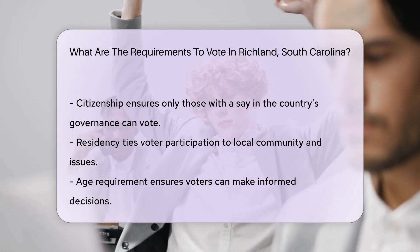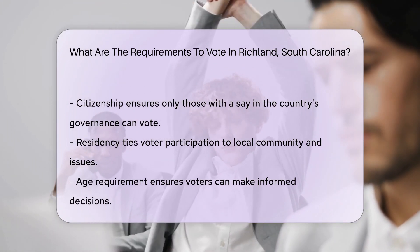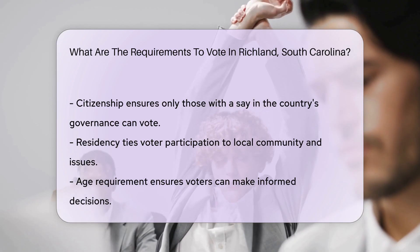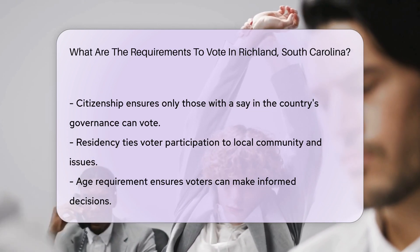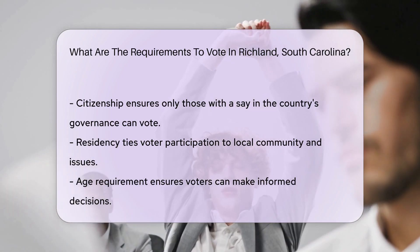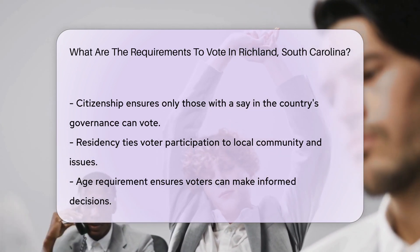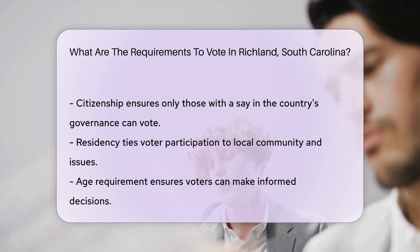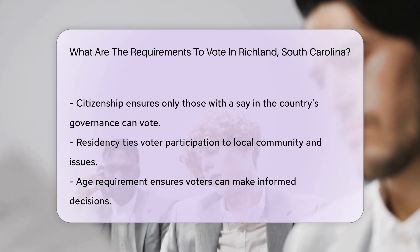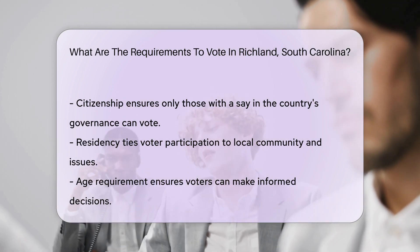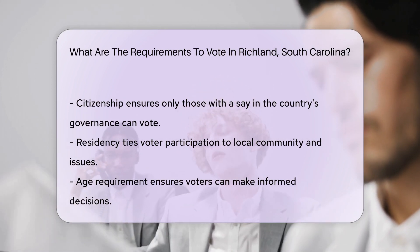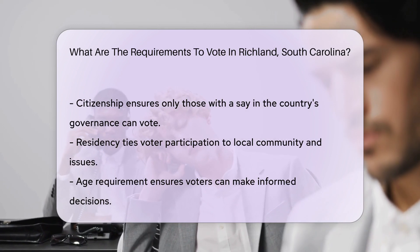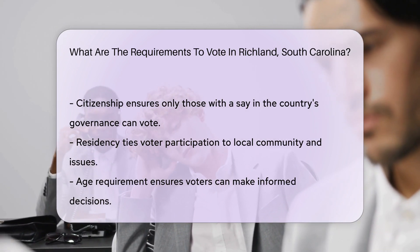Furthermore, individuals must not be serving a sentence for a felony conviction, including probation or parole. The restoration of voting rights post-sentence varies by state, but in South Carolina, rights are restored upon completion of the sentence, including probation and parole.